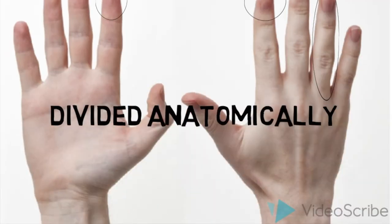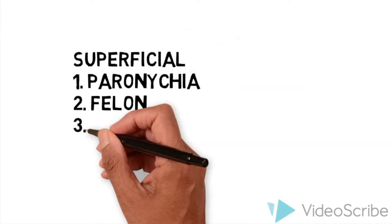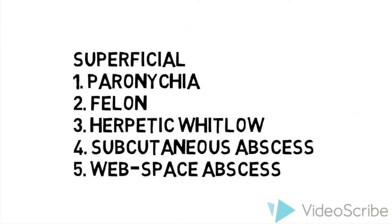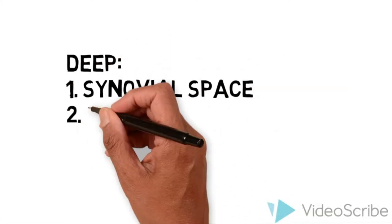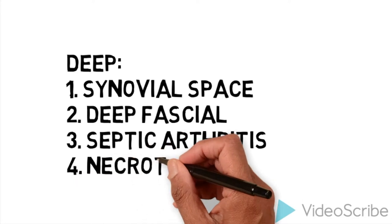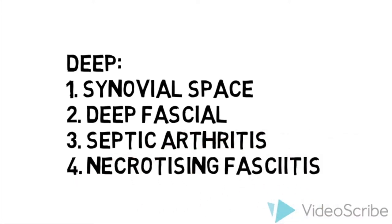This can be divided anatomically into either superficial or deep infections. Superficial including paronychia, felon, herpetic whitlow, subcutaneous or web space abscess, and deep infections including infections of synovial space or deep fascia, septic arthritis or necrotizing fasciitis.